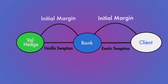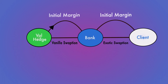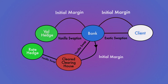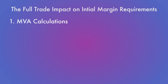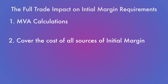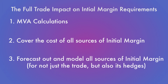But looking at the full picture, we also have a certain amount of residual delta risk that must be hedged. That delta risk will be hedged using vanillas, and those vanillas are very likely to be centrally cleared, so they'll attract a certain amount of clearing house initial margin. So longer term, when looking at MVA calculations, we're trying to cover the cost of all sources of initial margin associated with this trade — we need to be able to forecast out and model all sources of initial margin for not just the trade, but also its hedges.